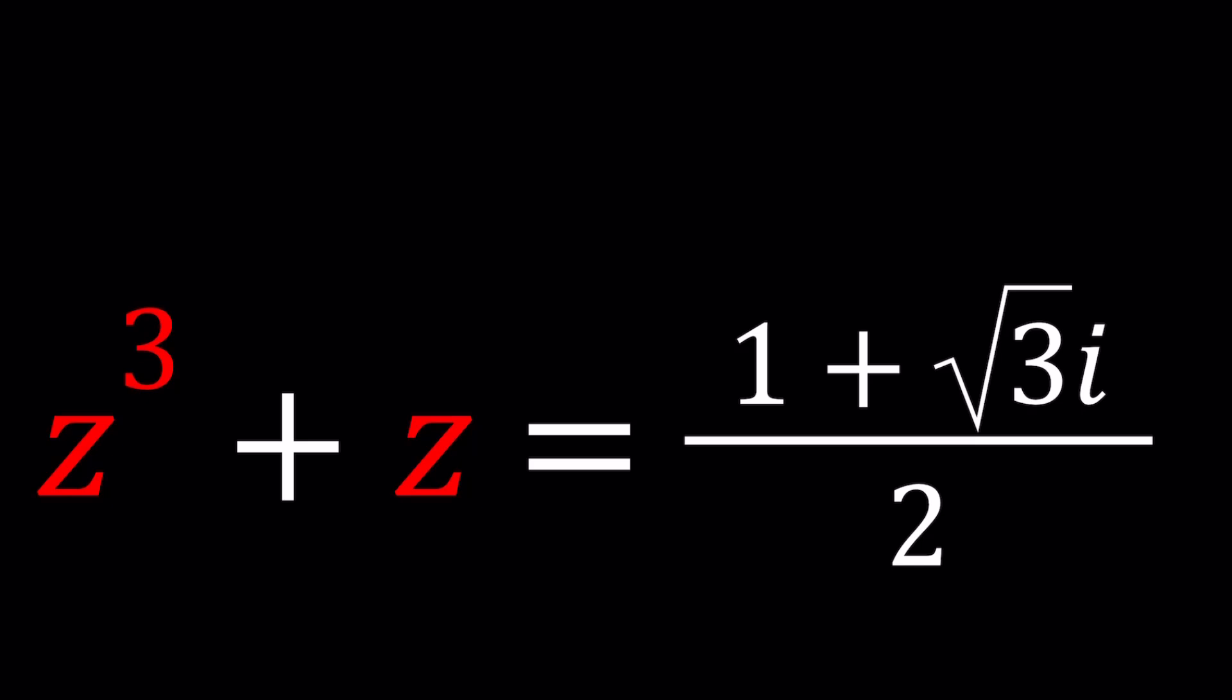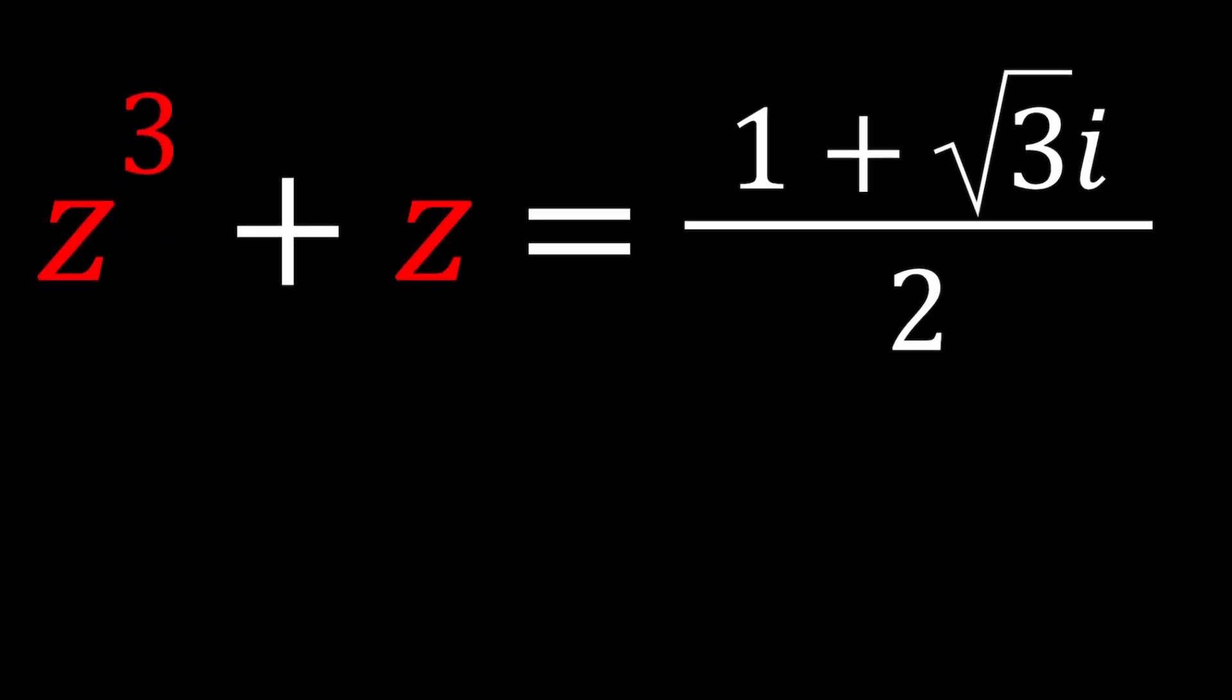Complex numbers are complicated and this makes it more complicated, doesn't it? No, not really. We have z cubed plus z equals one plus square root of three i all over two, and we're going to be solving for z. I'll be presenting three methods even though not all methods will be complete.